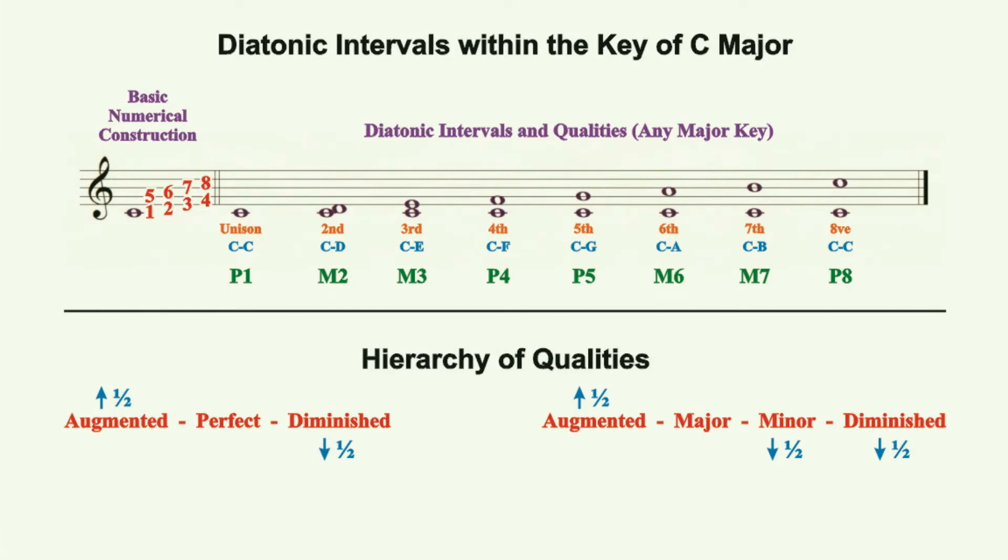In this next illustration, we are reminded of the way in which interval qualities are formed. Beginning with perfect intervals, we add 1 half step in pitch to change the quality from perfect to augmented. We subtract 1 half step in pitch to change the quality from perfect to diminished. Moving to the major intervals, we add 1 half step in pitch to change the quality from major to augmented, while we subtract 1 half step in pitch to change the quality from major to minor.